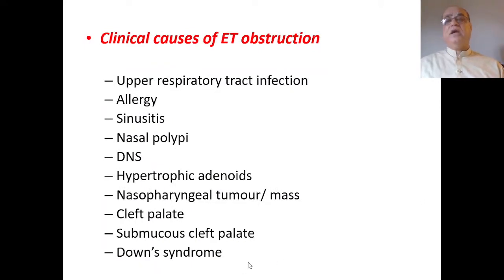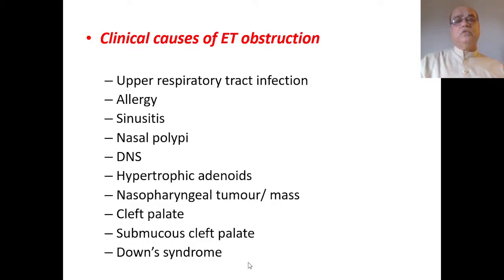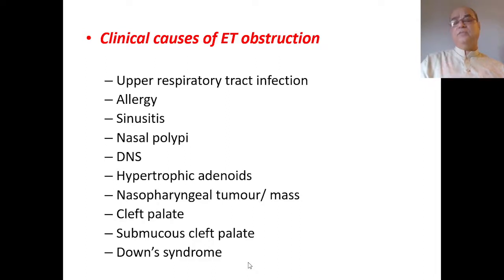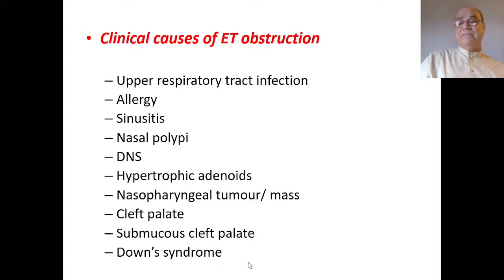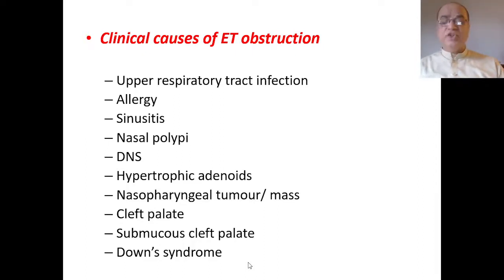The most common clinical causes are inflammatory — edema of the torus tubarius or the mucosa and submucosa at the nasopharyngeal end of the Eustachian tube. Upper respiratory tract infections, allergy, sinusitis, nasal polypi, deviated nasal septum leading to post-nasal discharge and sinusitis are common causes. Hypertrophic adenoids or nasopharyngeal tumors can mechanically obstruct it, and cleft palate, submucous cleft palate, or Down syndrome due to craniofacial anomalies can also lead to Eustachian tube dysfunction.